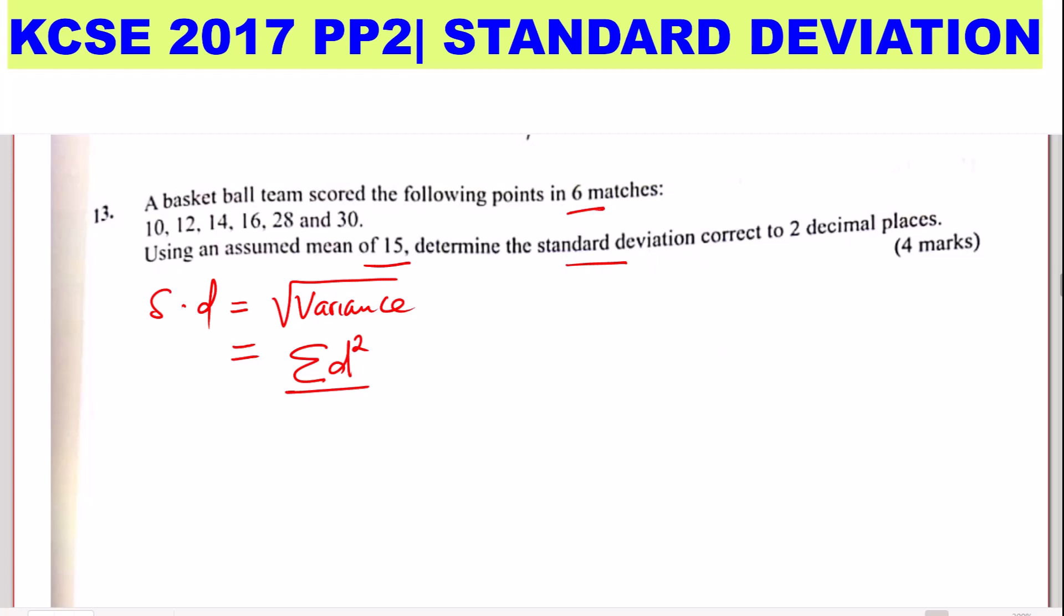They are six. That is six matches which is N. Subtract the summation of deviations of the mean divided by the total frequency, then you square this and get the square root. So in this case, D is the deviation, the deviation from the mean. It is important to note that.